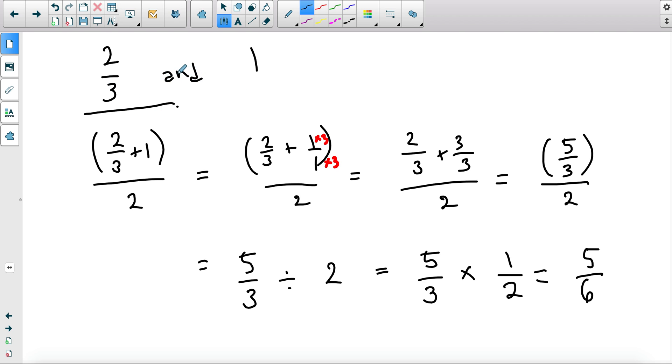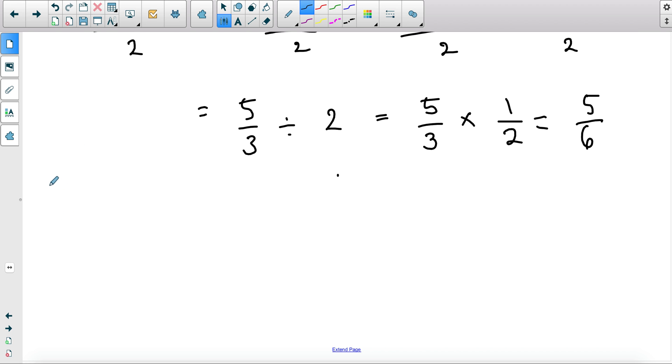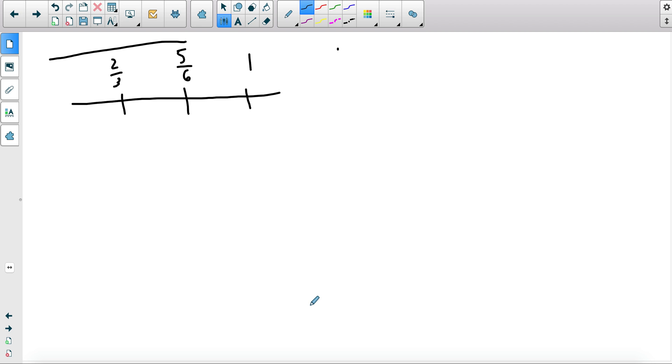We can find even more rational numbers in between these two numbers, so we can expand on our work. On a number line where we have 2 over 3 and 1, we found 5 over 6. We can repeat this process as many times as we want to find as many rational numbers as we want, so we can repeat it with 5 over 6 and 1, or 2 over 3 and 5 over 6. I'll continue with 2 over 3 and 5 over 6. You can pause this video to use this as a practice.